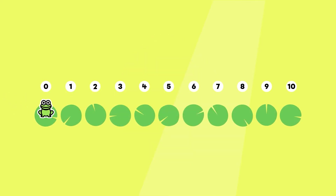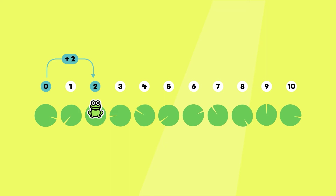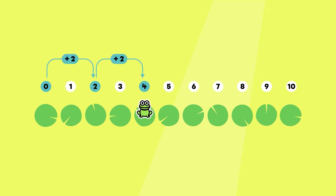I can make this frog jump by two on the lily pads. In this example, the frog starts on lily pad zero. To make the first jump, I add two to zero. Zero plus two equals two. The frog jumps to two. Two plus two equals four. The frog jumps onto four. I jump again by two. Four plus two equals six. The frog jumps onto six.